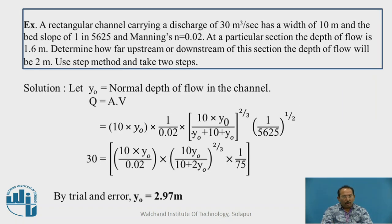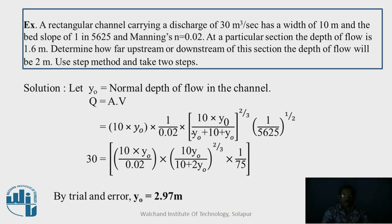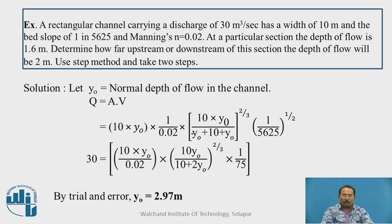Now we will solve one problem on this step method. It is a problem, a rectangular channel carrying a discharge of 30 m3 per second has a width of 10 m and a bed slope of 1 in 5625 and Manning's n as 0.02. At a particular section, the depth of the flow is 1.6 m. Determine how far upstream or downstream of the section the depth of flow will be 2 m. Use step method and take two steps.